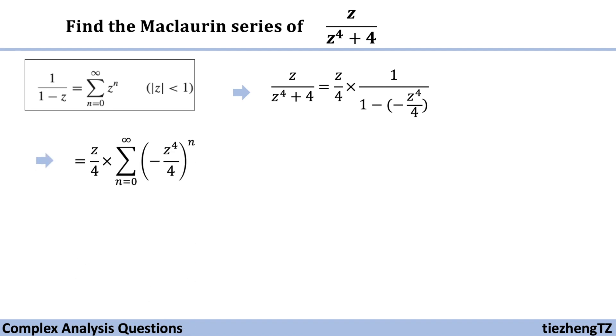So now we can just use the given function to substitute. We have z over 4 times sum n starts from 0 to infinite, minus z to the power of 4 over 4, the whole part to the power of n.